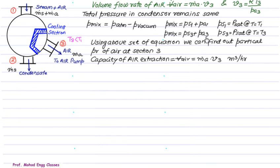Knowing the value of P mix, we can find out partial pressure of air at section 3. And once the partial pressure of air at section 3 is known, we can find out V3. V bar air is mass of air multiplied by V3.